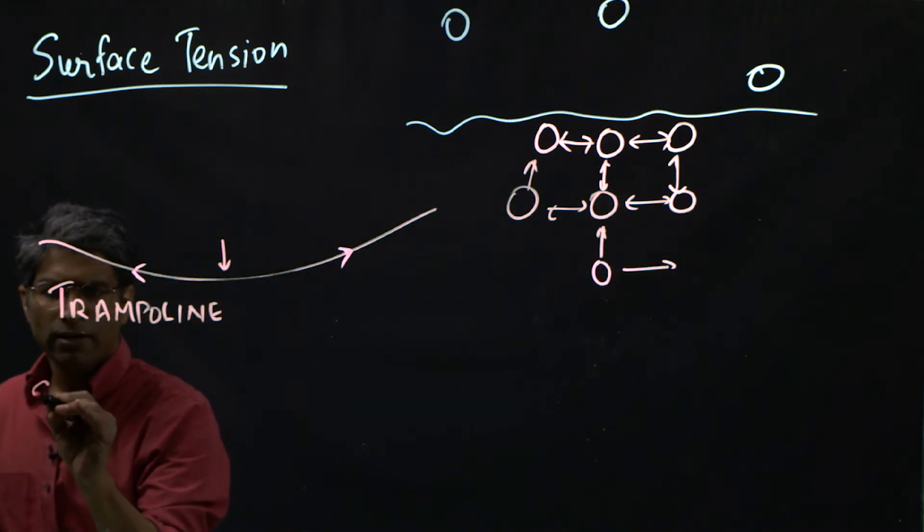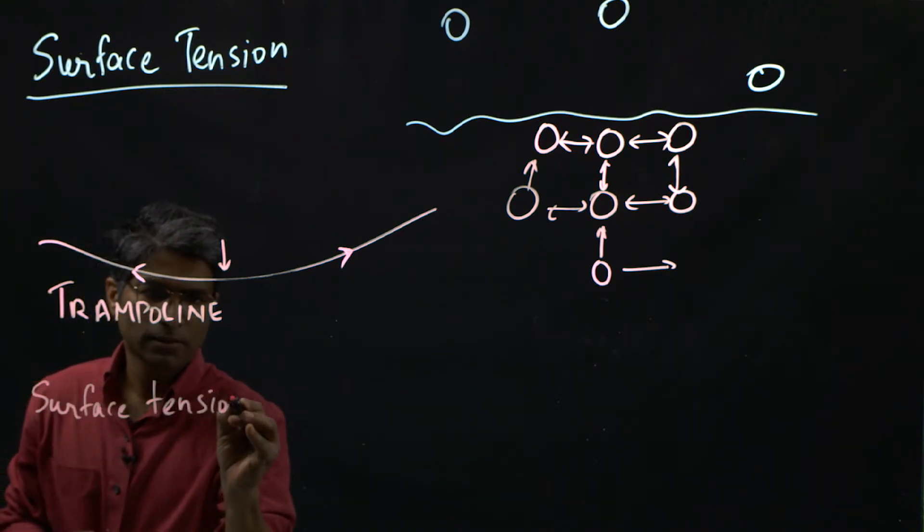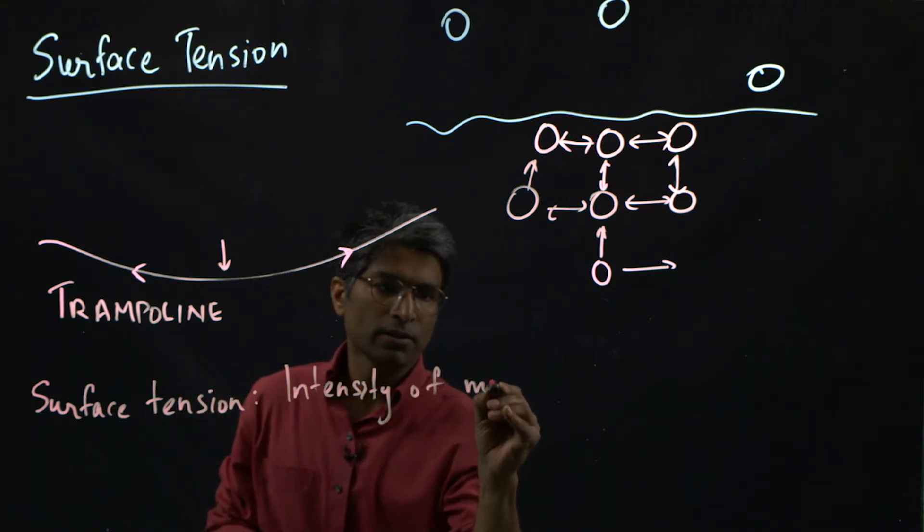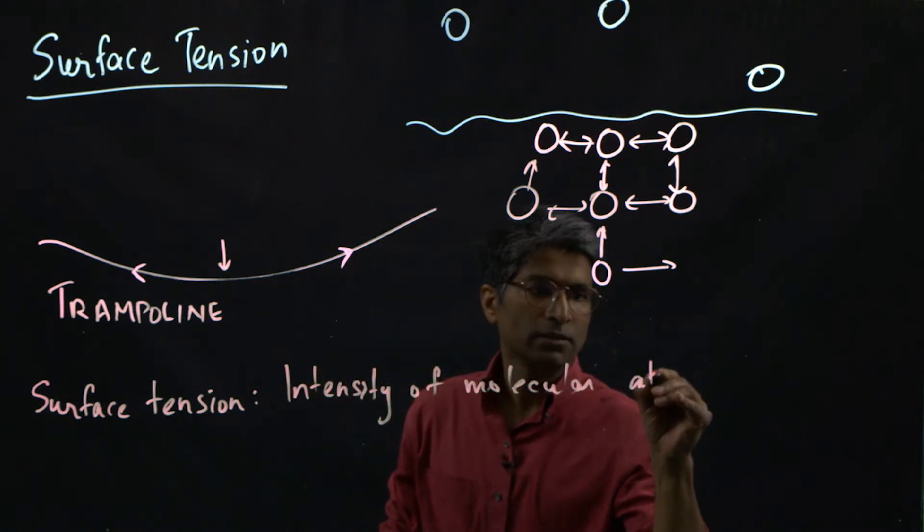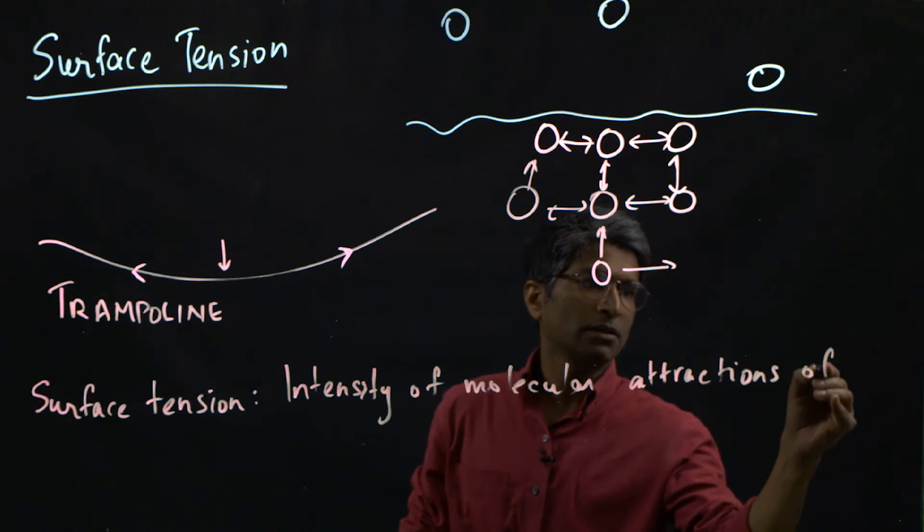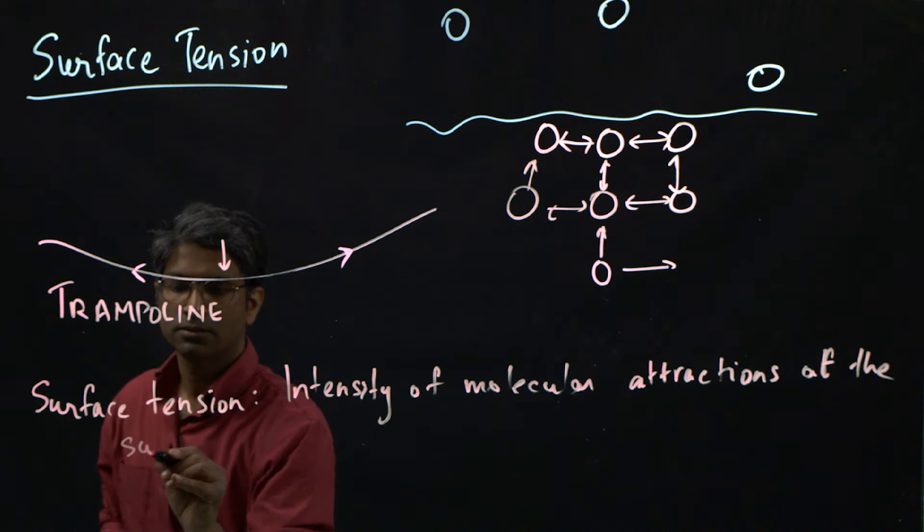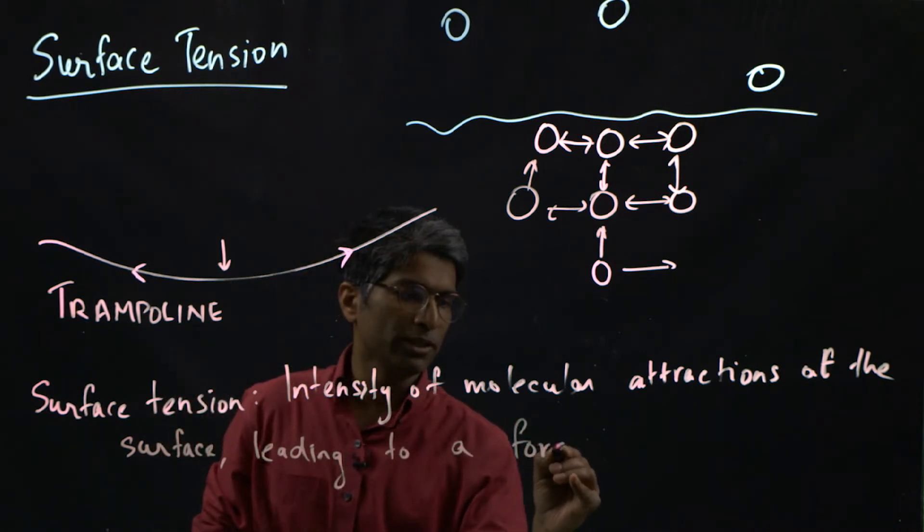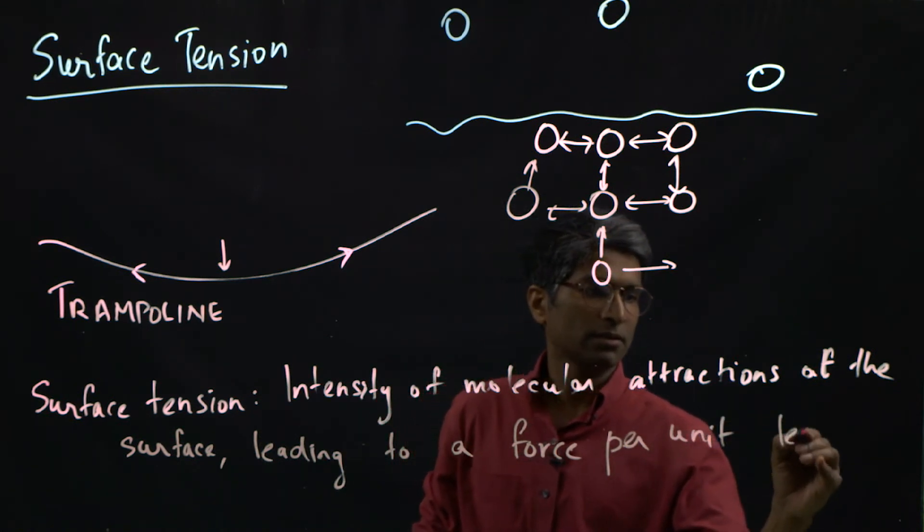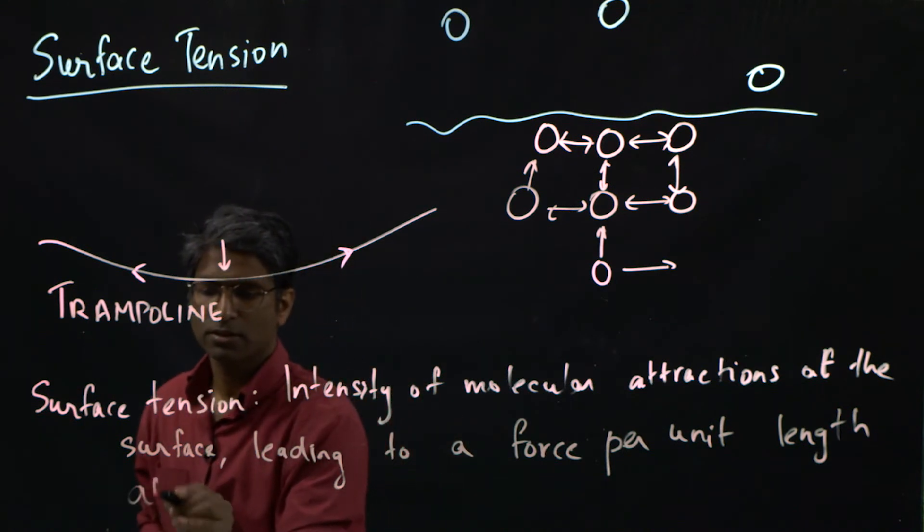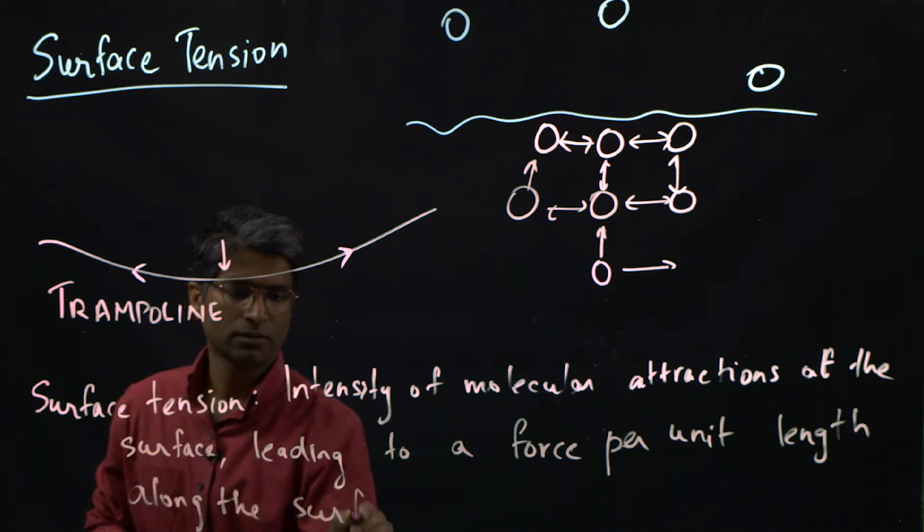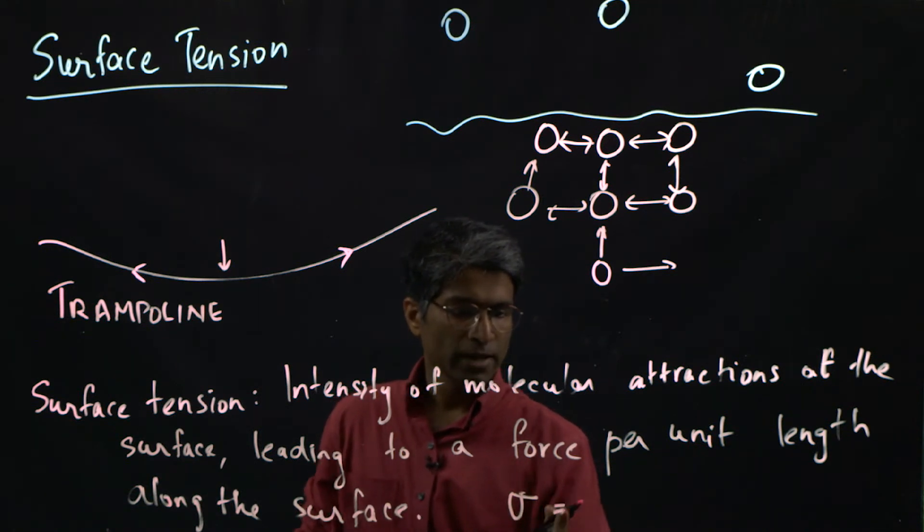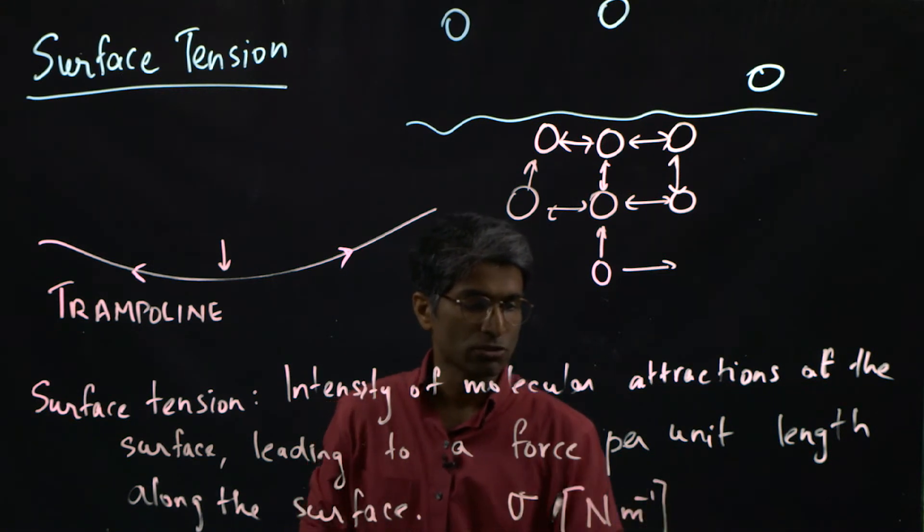So let's define formally surface tension. It's defined as intensity of the molecular attractions at the surface, leading to a force per unit length along the surface. So this is a property of the fluid. It's given by sigma, denoted by sigma.